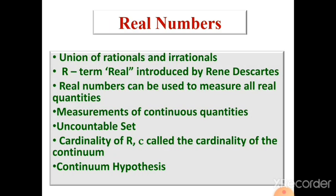Together, rational and irrational numbers combine to form the real numbers. The term 'real' was first used by René Descartes, and the symbol R is used to denote real numbers. With real numbers, all real quantities can be measured, and the number line becomes continuous — whereas with only rationals there are breaks. The set of all real numbers can be represented along a straight line called the real number line. Real numbers are used for measurement of continuous quantities and form an uncountable set.